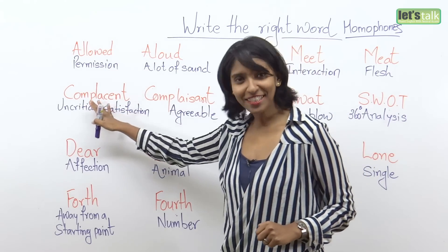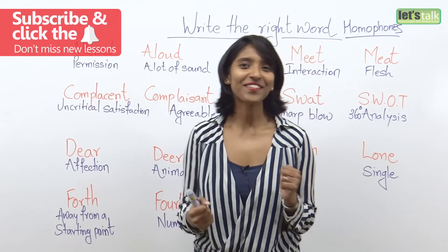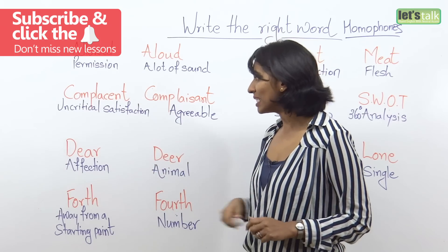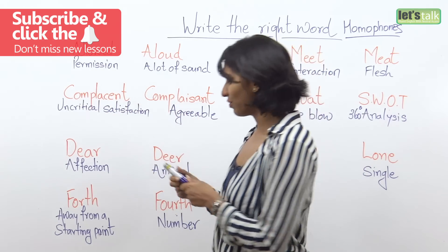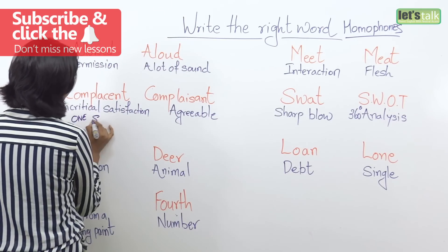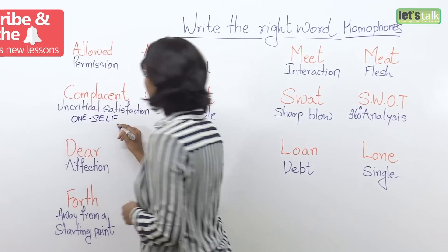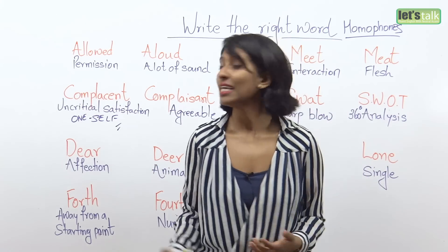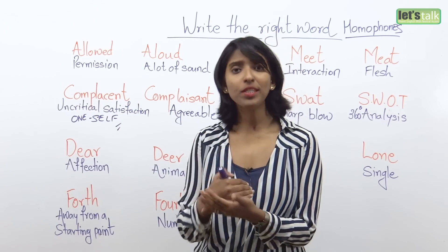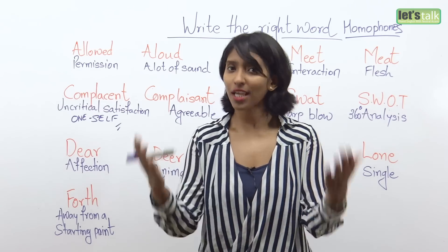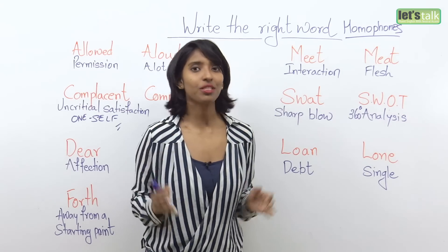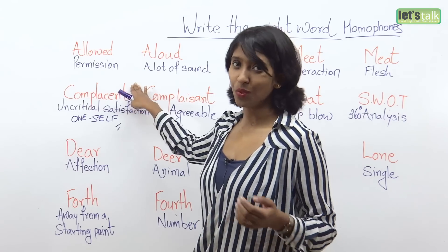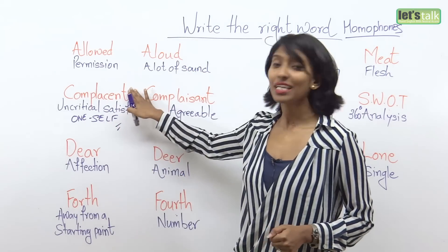Moving on to complacent versus complaisant. I know it sounds very similar but they are completely different from each other. Complacent means uncritical satisfaction with oneself — key here is oneself. How do you use this in a sentence? For example, you say: we cannot afford to be complacent with our performance. That means we have to make sure whatever we do is right and up to standards. Also, we cannot be complacent with the security of the nation.